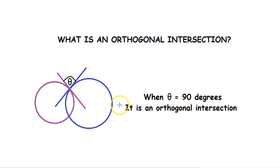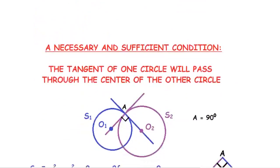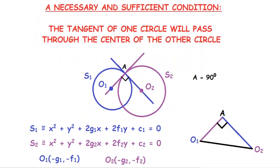Now that you know what an orthogonal intersection is, let's go into the special properties and equations of an orthogonal intersection. For two circles to intersect orthogonally, there exists a necessary and sufficient condition. The tangent of one circle will pass through the center of the other circle.